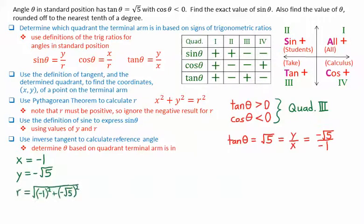We can then calculate r using Pythagorean Theorem. The square root of negative 1 squared plus negative root 5 squared gives a result of r equals root 6.